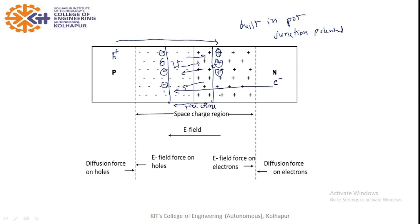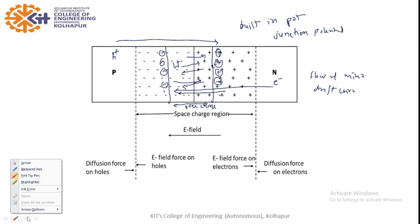The positive ion layer on the n-side attracts electrons from the p-side, and the negative ions attract holes from the n-side — so they attract minority carriers. Due to this junction potential there is flow of minority carriers, and this we call drift current. So to summarize: diffusion current is due to majority carriers, and drift current is due to minority carriers.